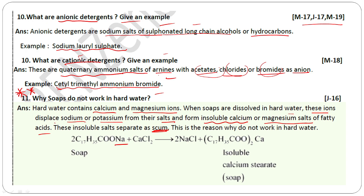The soap reacts with calcium chloride in hard water: calcium replaces sodium, forming insoluble calcium fatty acid salt (scum). This precipitate is insoluble in water and settles at the bottom, which is why soap does not work effectively in hard water.